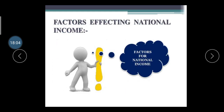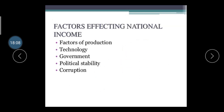Now, what are the factors affecting national income? First, factors of production — land, labor, capital, and entrepreneur. Higher wages, salaries, and income have a direct effect on national income. Second, technology — if technology is advanced and working smoothly, production automatically increases. Using traditional methods instead of new technology is not suitable for a developing nation.